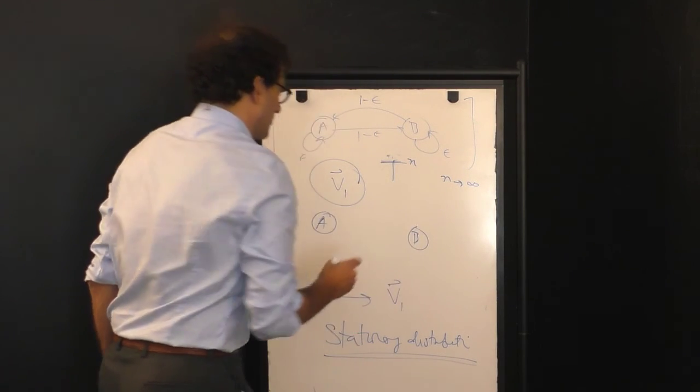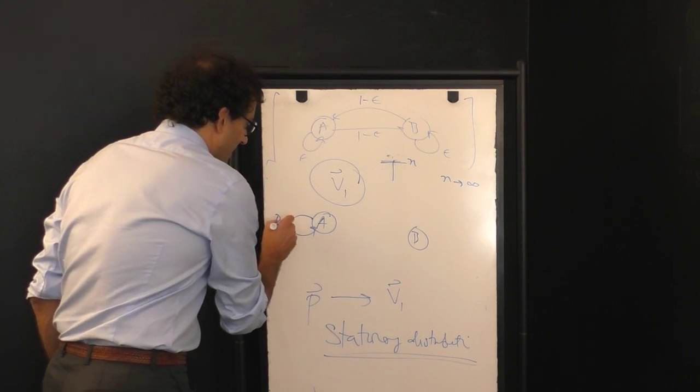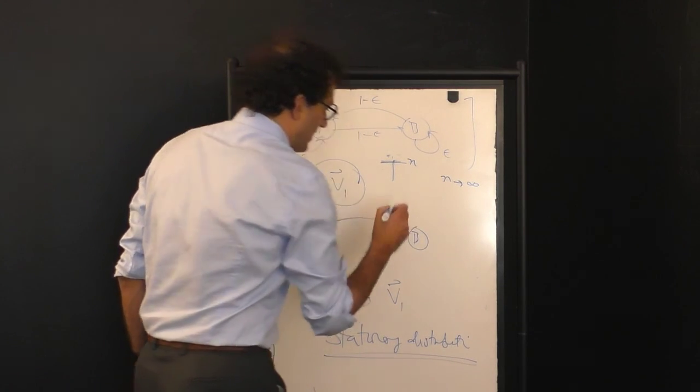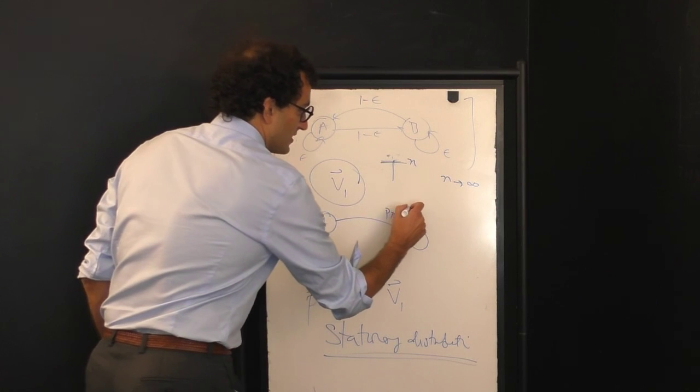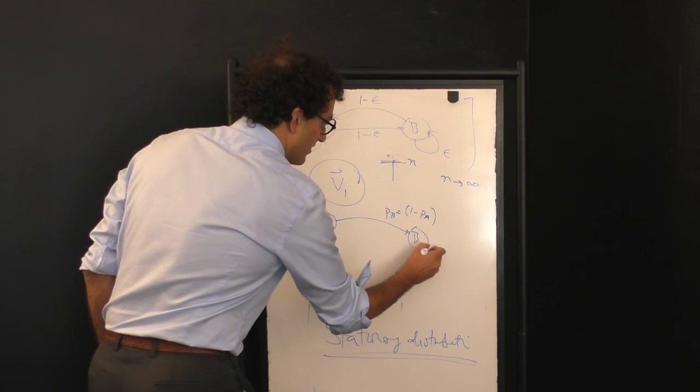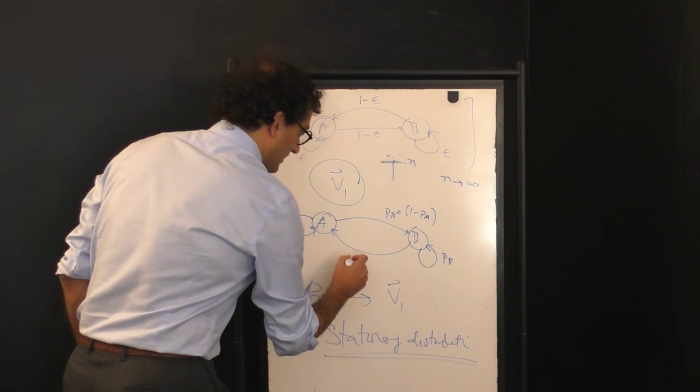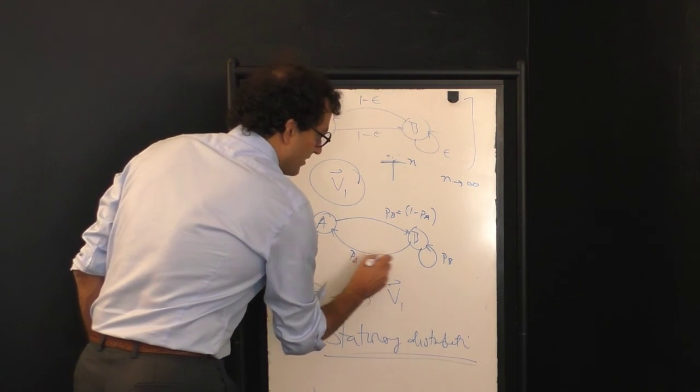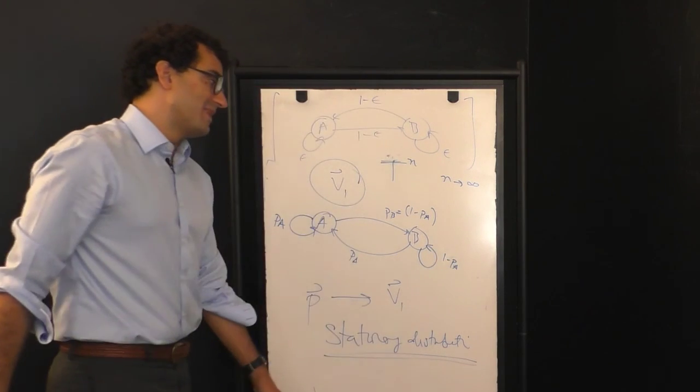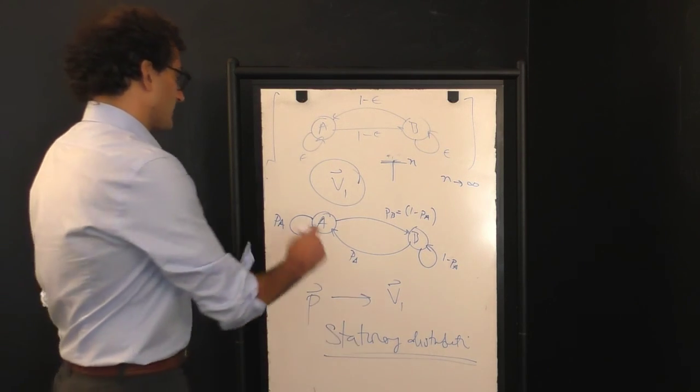And in fact, if you begin in state B, you will also be taken to the identical probability distribution V1. And so in the end, the matrix will take the following form. If you begin in state A, you have some probability, call it P A, of staying in state A, and you have some probability of ending up in state B, call it P B. And then we know of course that that's equal to 1 minus A. Similarly, if you're in state B, you have some probability to stay in state B, and you have some probability to end up back in state A. And again, we can write the probability of being in state B as 1 minus the probability of being in state A.